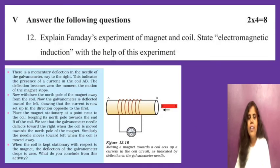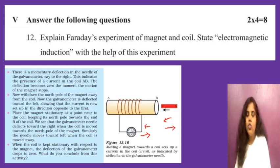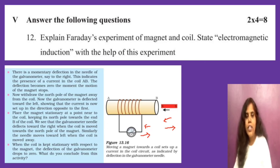Question 12: explain Faraday's experiment of magnet and coil, and state electromagnetic induction with a diagram. Draw a coil connected to a galvanometer with a magnet. When the magnet is moved into the coil, there is deflection in the galvanometer. When the magnet is moved out, the deflection is in the opposite direction. When both are stationary, there is no deflection. Write the experiment with the diagram and the statement of electromagnetic induction for 4 marks.